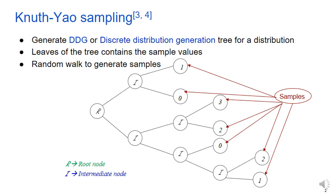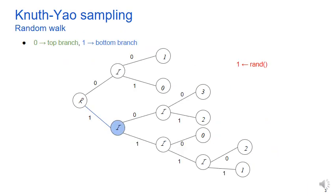Let's see how. Starting from the root, we generate random bits. Depending on the bit, we either choose the top or the bottom branch. Here our first random bit is 1, so we choose the lower branch. The next bit is 0, so we choose the top one. The next bit is 1, so we choose the bottom branch. And now we have hit a leaf node. We stop the sampling here and return the value in the leaf, which is 2, as the sample.